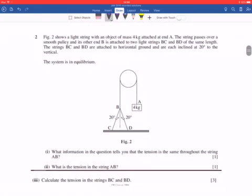Question 2. Figure 2 shows a light pulley string with an object of 4 kilograms. And the string passes over a smooth pulley. It's either end. It's attached to two light strings, B, C, the same length. The strings are attached to a horizontal ground, inclined to the field. It's in equilibrium.